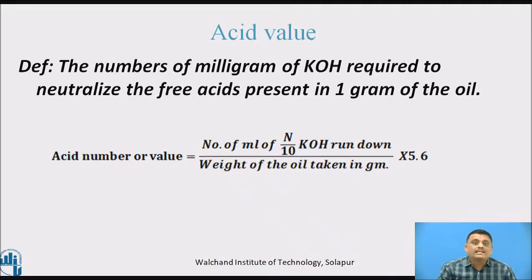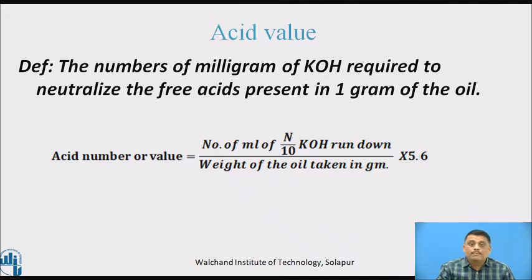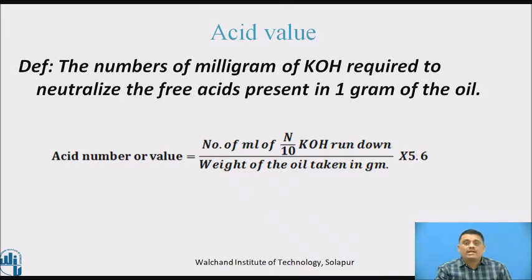The acid value definition once more: the number of milligrams of KOH required to neutralize the free acids present in one gram of the oil. Therefore, acid value = (number of ml of N/10 KOH) ÷ (weight of the oil in grams) × 5.6, where N/10 means 0.1 normal KOH, and 5.6 is the standard factor.